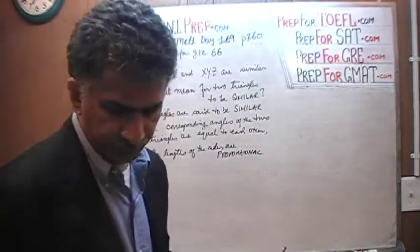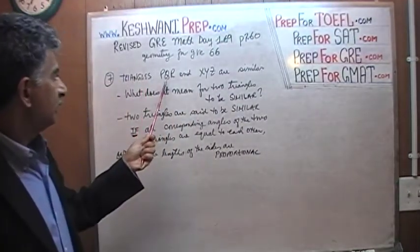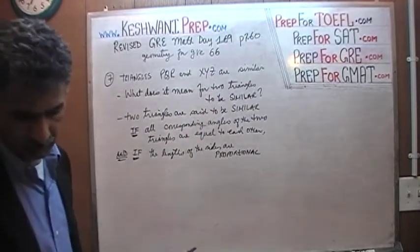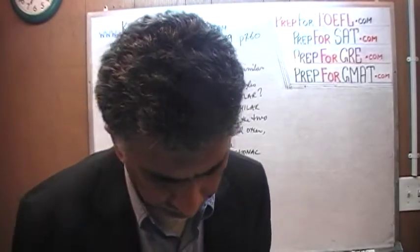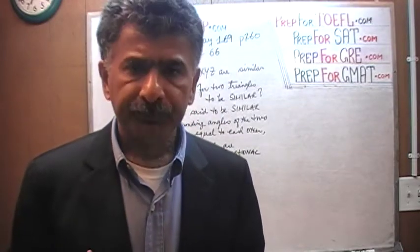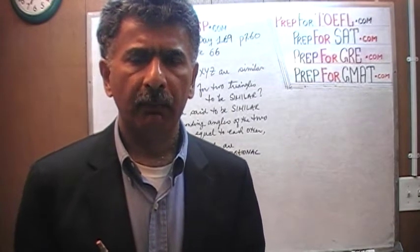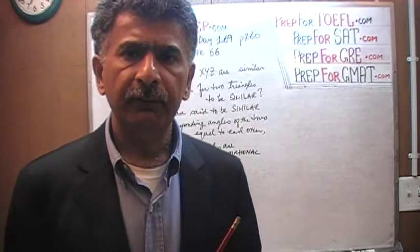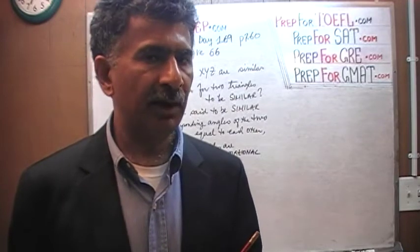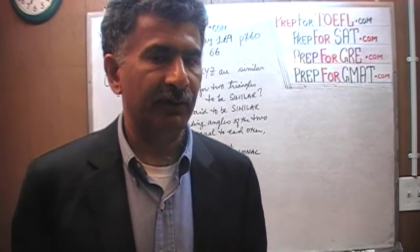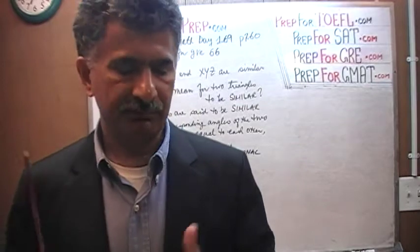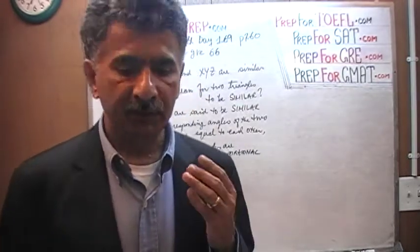I am going to read the problem to you. It says the triangle PQR and XYZ are similar. That is the very first sentence — are similar. Before we go any further than that, ask ourselves: what does it mean for the two triangles to be similar? Not the same. If the two triangles are the same, that means they have the exact same angles, exact same lengths — everything is the same. One is just an exact image of the other. Here they are saying the two triangles are similar.